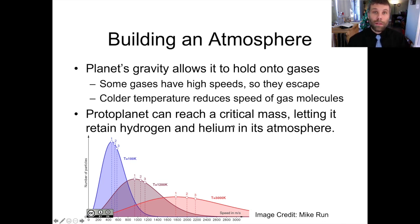Some protoplanets can get so massive that they reach a critical mass and their gravity becomes strong enough to allow them to hold on to not just heavy gases like carbon dioxide and nitrogen, but also hydrogen and helium. If you haven't already, you should try out the gas retention simulator from NAP linked at the end of this video.